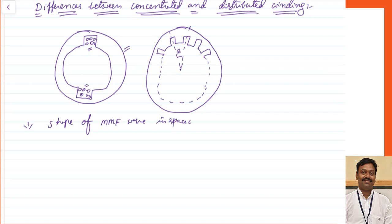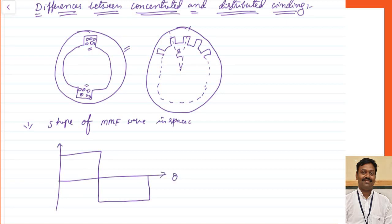The shape of the MMF wave in space will be like this — it will be in the rectangular form because all the flux, all the MMF, is concentrated at a single point. This is the MMF with respect to space.